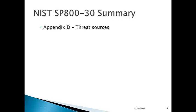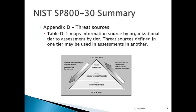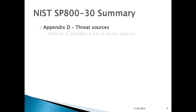Now let's look at Appendix D, the threat sources. There are a number of tables of interest. Table D1 maps information source by organizational tier — meaning what tier the source was defined in versus where we're doing the assessment. Threat sources defined in one tier may be used in assessments in another. The tiers are: organization, mission/business processes, and information systems.